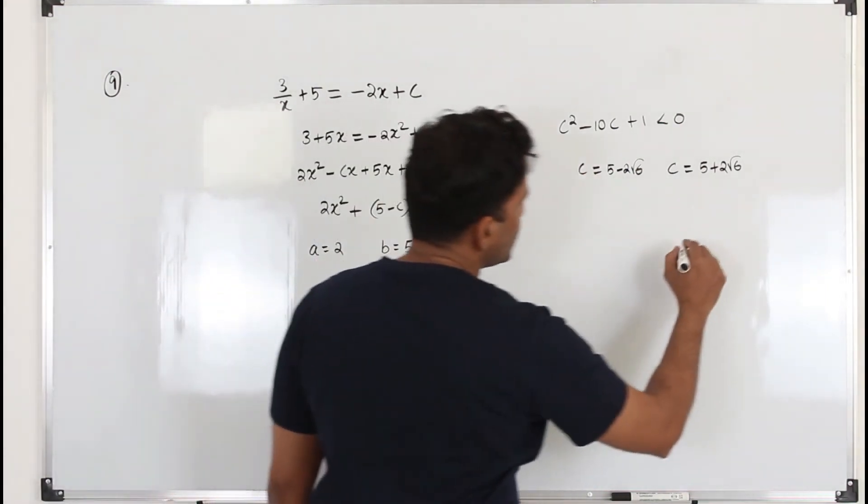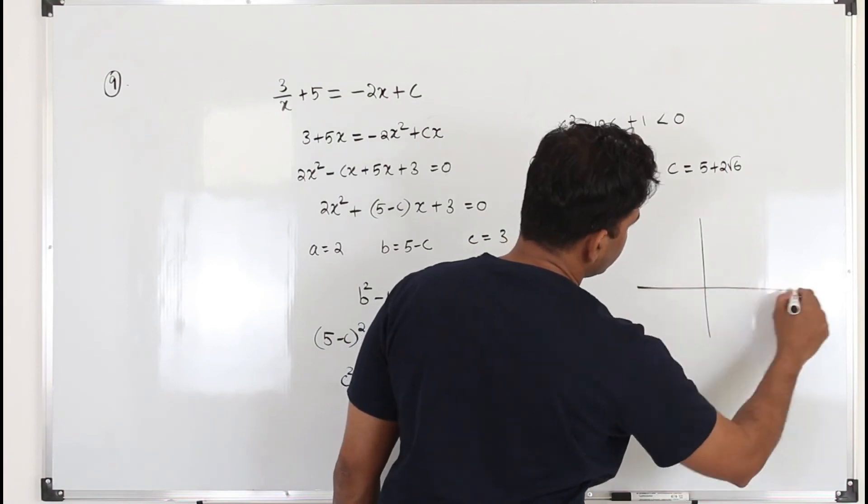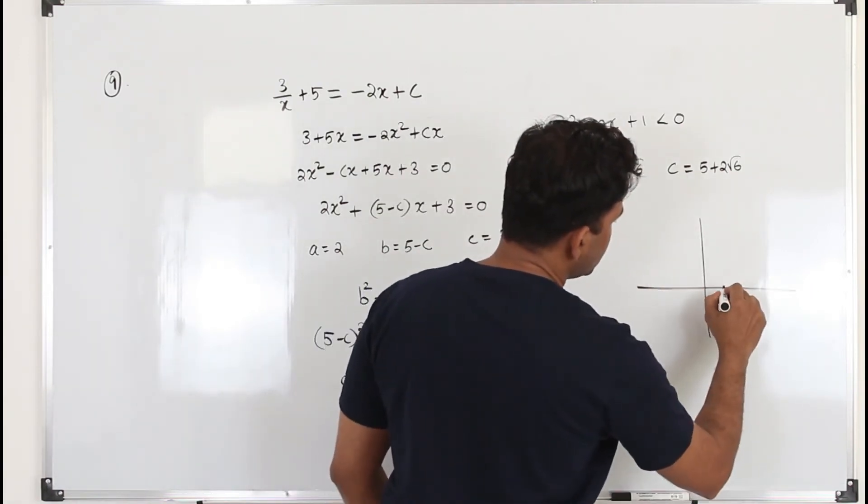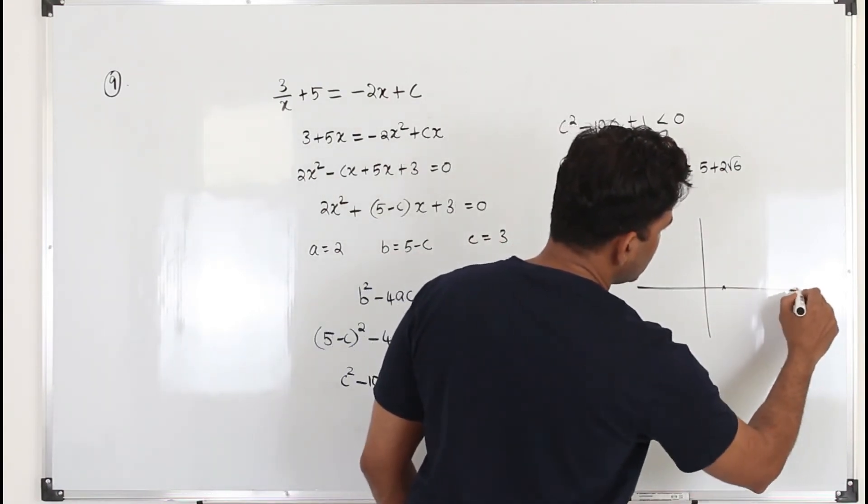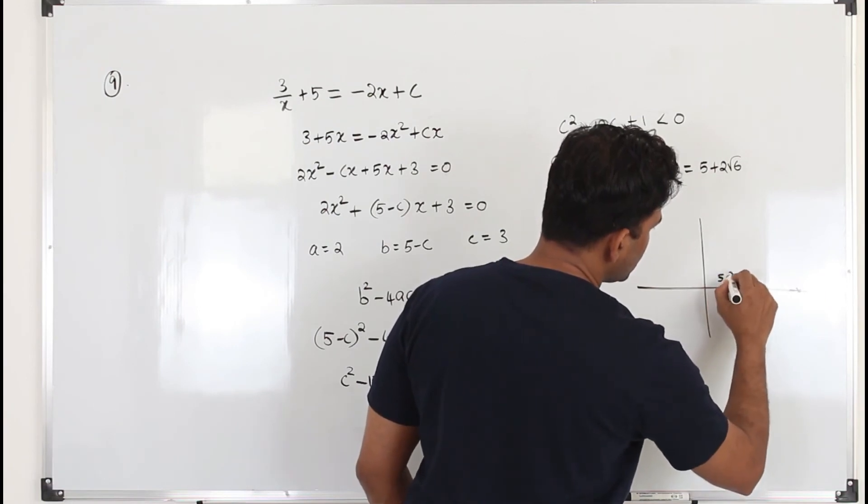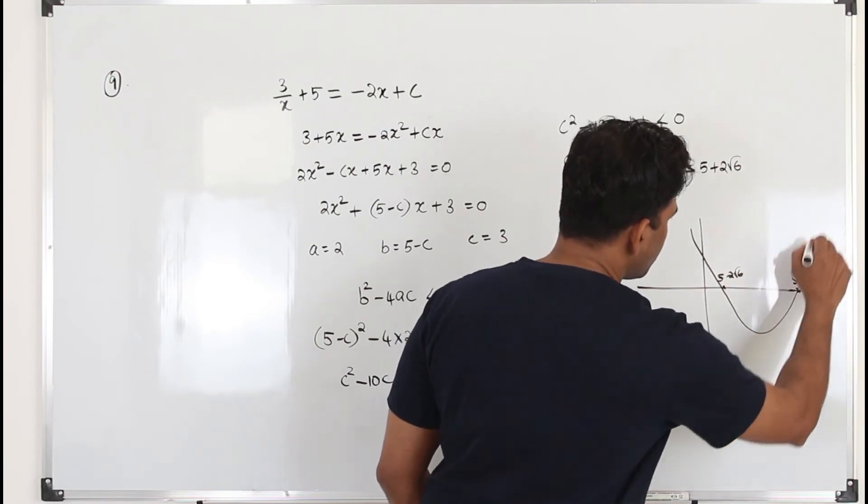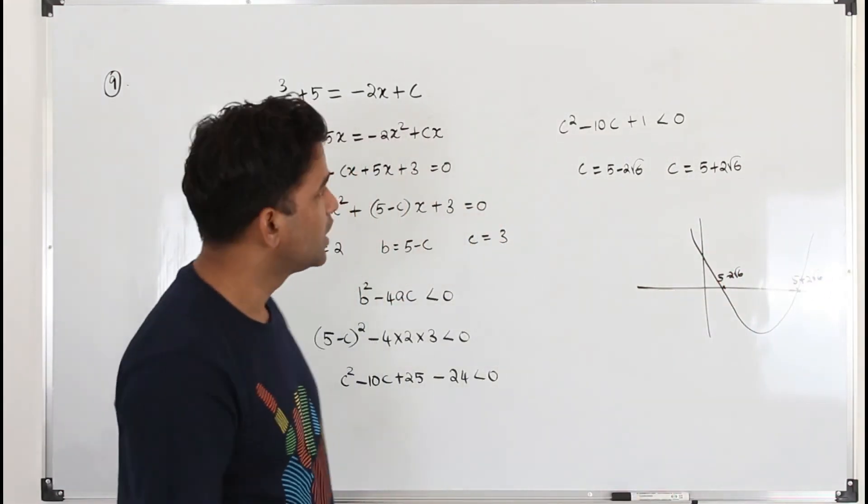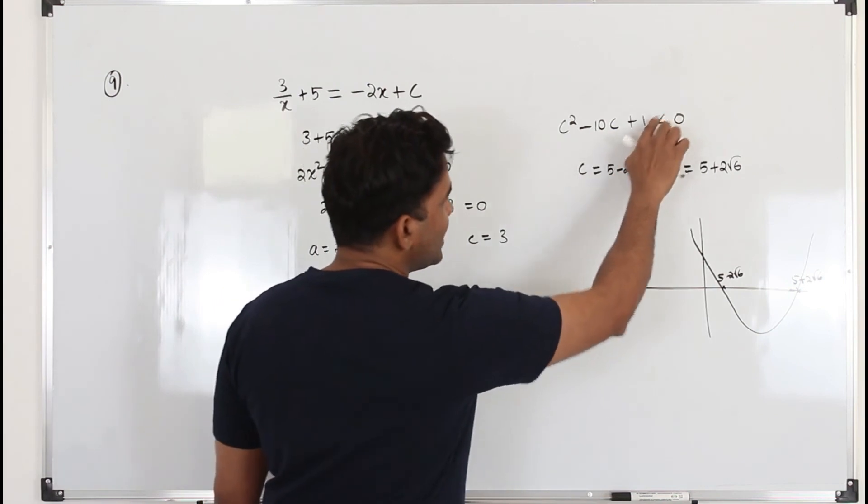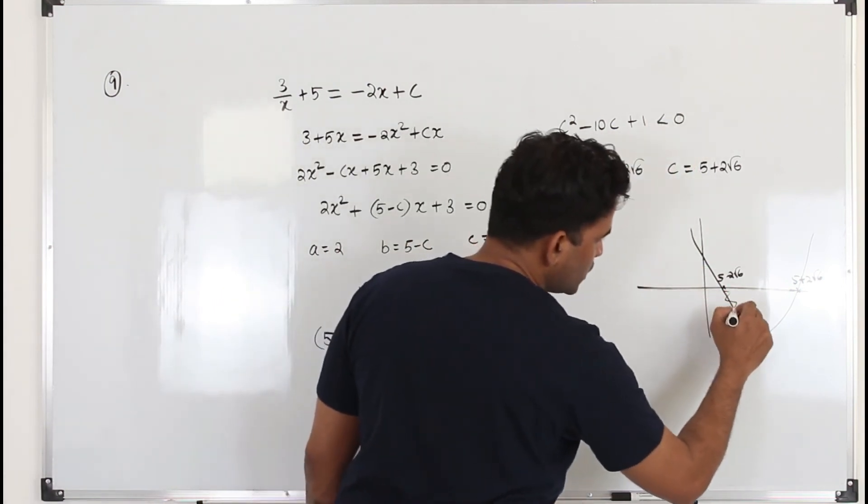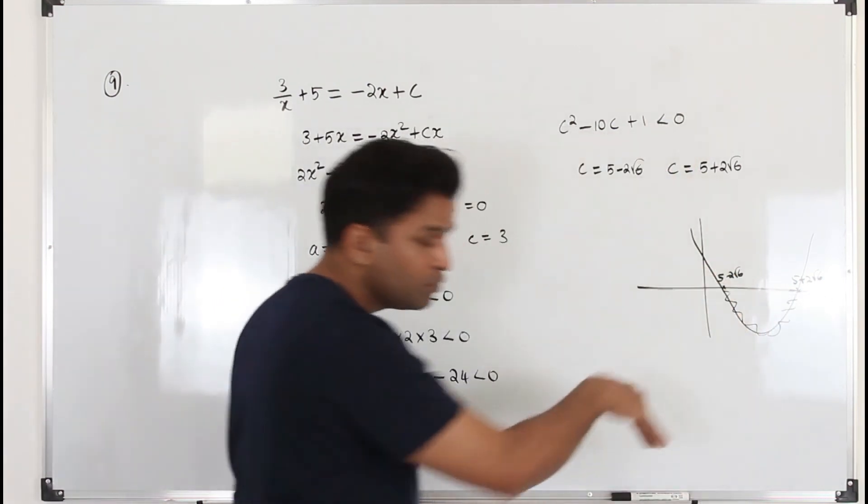If you sketch this graph, this little graph, both numbers are positive but this is a smaller number. So let's say you have 5 - 2√6 here, 5 + 2√6 here. The coefficient of c² is positive, so you will get this graph. When they say the function is less than 0, they are talking about this part of the graph, the graph that lies below the x-axis.